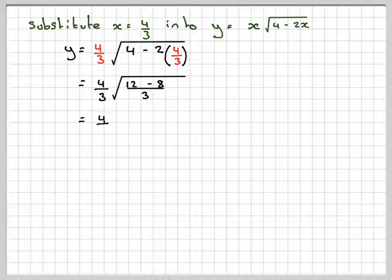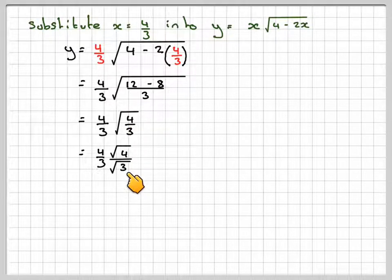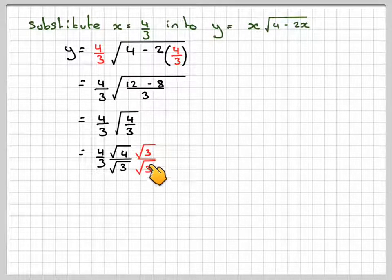Which is 4 over 3 times the square root of 4 over 3. If we now rewrite this bit here, so square root of 4 over the square root of 3, and rationalize the denominator by multiplying the numerator and the denominator by root 3.